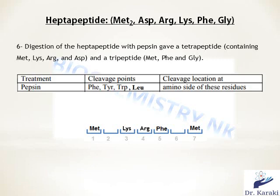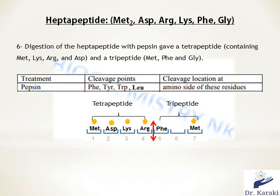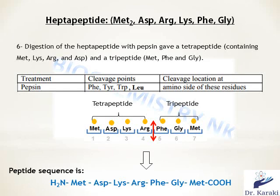Finally, the heptapeptide is subjected to digestion with pepsin. Pepsin is an endopeptidase that cleaves the peptide bond on the amino side — before phenylalanine, tyrosine, tryptophan, and leucine. In this case it cleaves before phenylalanine, yielding a tetrapeptide containing methionine, lysine, arginine, and aspartic acid — so the missing amino acid in the second position is aspartic acid — and a tripeptide containing methionine, phenylalanine, and glycine, so the sixth position is glycine. Thus the full peptide sequence is: methionine, aspartic acid, lysine, arginine, phenylalanine, glycine, methionine.